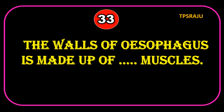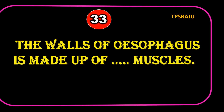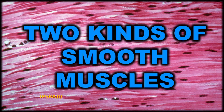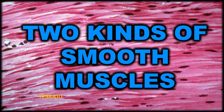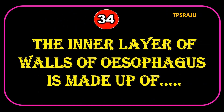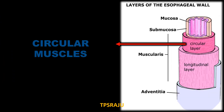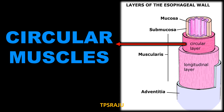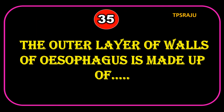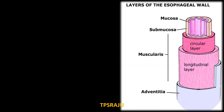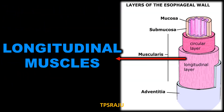The walls of the esophagus are made up of two kinds of smooth muscles. The inner layer is made up of circular muscles, and the outer layer is made up of longitudinal muscles.